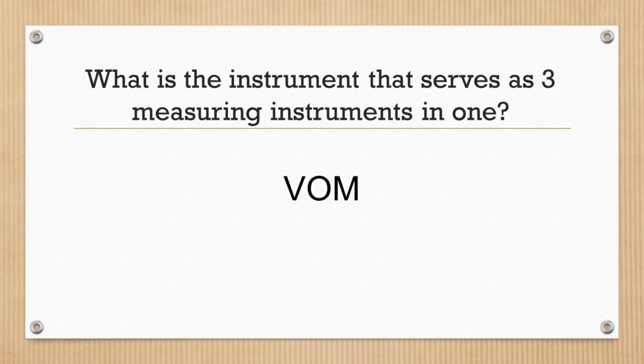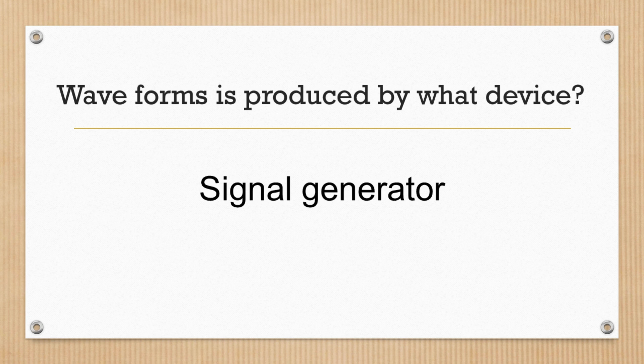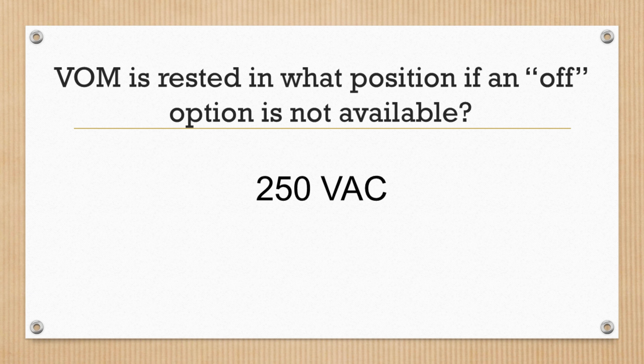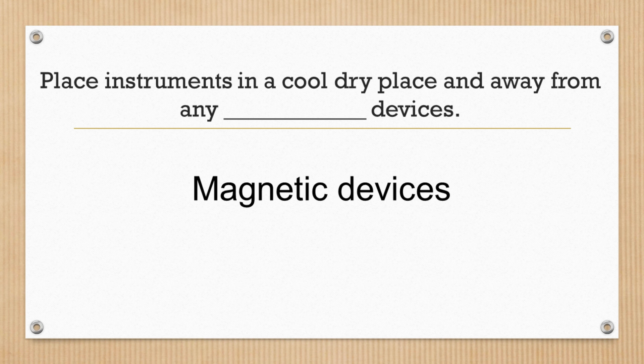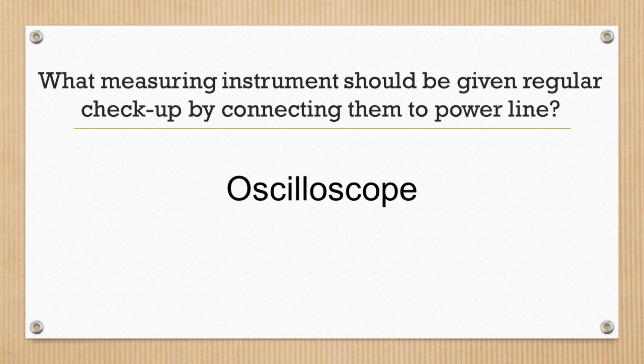What is the instrument that serves as three measuring instruments in one? VOM. Waveforms are produced by what device? Signal generator. VOM is rested in what position if an off option is not available? 250 VAC. Place instruments in a cool, dry place and away from any magnetic devices. What measuring instrument should be given a regular checkup by connecting it to the power line? Oscilloscope.